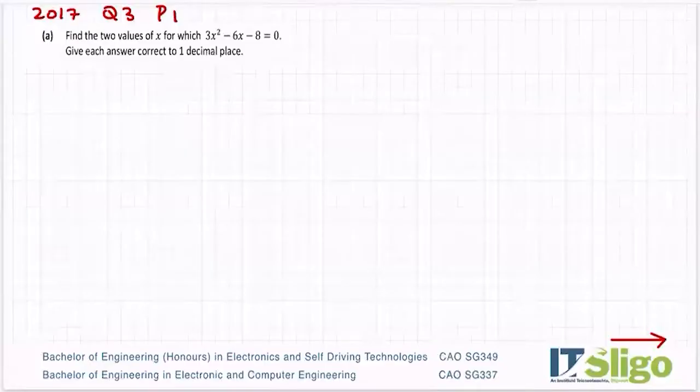Right, the 2017 question 3, a little calculus question at the end, max min points. Part A: find the two values of x for which 3x² - 6x - 8 is equal to zero. Give your answer correct to one decimal place. When I see decimal places here, I know straight away it's going to be the minus b formula.